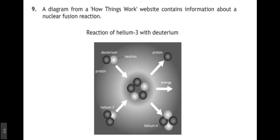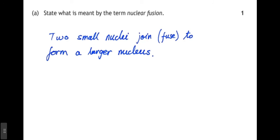Question number 9. A diagram from How Things Work website contains information about a nuclear fusion reaction. So, here's the reaction of helium-3 with deuterium. And we can see the deuterium and the helium-3 combining, and that creates a helium-4 nucleus and a proton, as well as some energy. So, state what is meant by nuclear fusion. Well, nuclear fusion is where two small nuclei join or fuse to form a larger nucleus, a little bit like this.